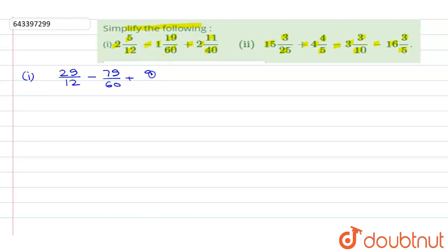Now for solving this, first we have to find the LCM of denominators. So LCM of 12, 60, and 40 will be equal to 120. Now we have to divide the LCM with the denominators.